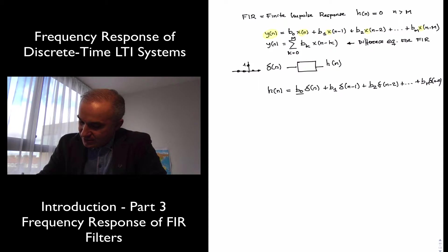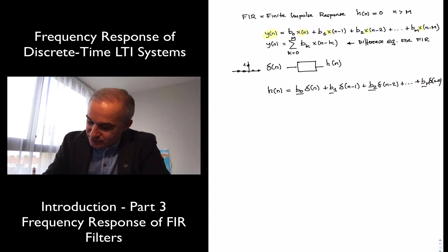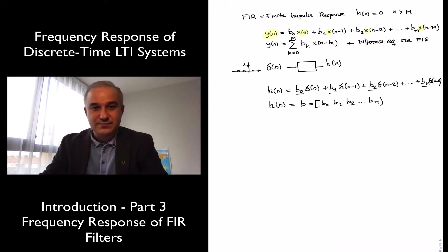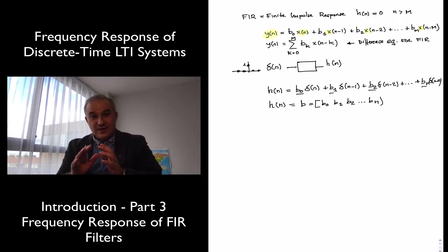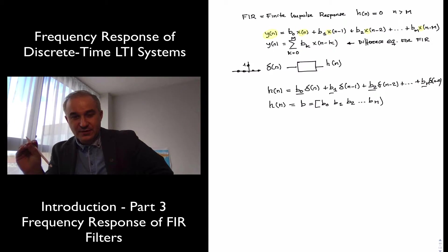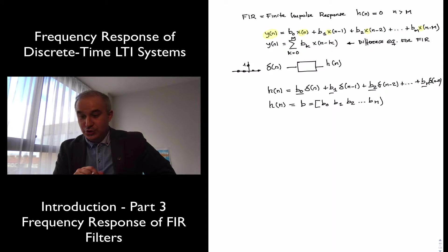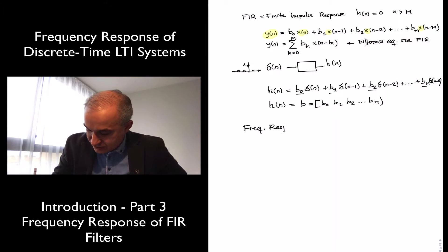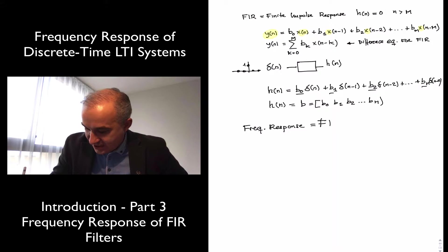Notice that the impulse response h of n just equals the vector of b coefficients: b0, b1, b2, ..., bM. The filter coefficients in an FIR filter equal the impulse response. So what is the frequency response? The frequency response is the Fourier transform of the impulse response.